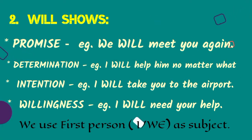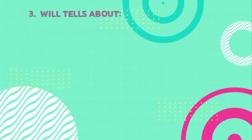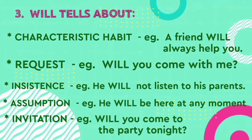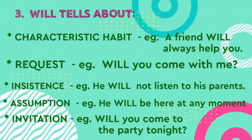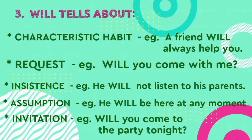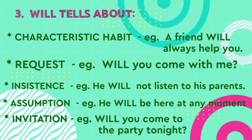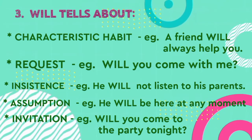Intention — when we want to do something, we use will. For example: I will take you to the airport. Willingness — I will need your help, where we use first person (I or we) as subject. Will also tells about characteristic habits — a friend will always help you. Request — will you come with me? Insistence — he will not listen to his parents. Assumption — he will be here at any moment. Invitation — will you come to the party tonight?